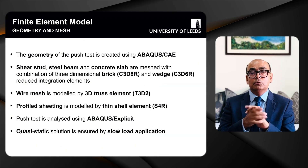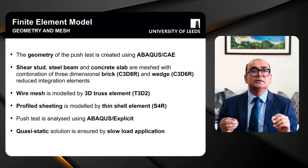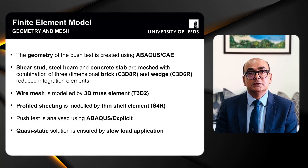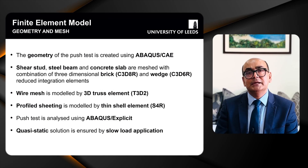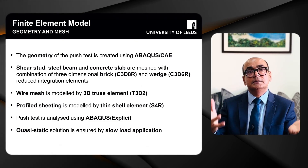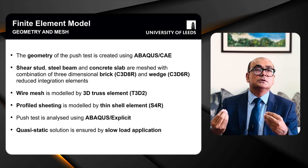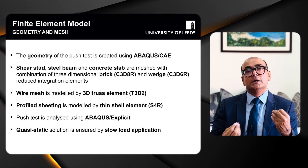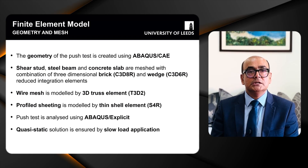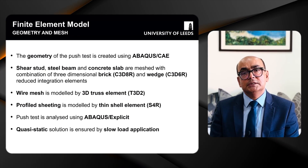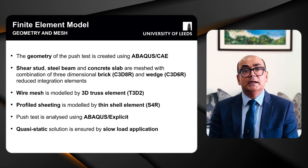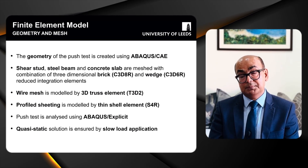The geometry was created using Abaqus CAE. The shear stud, steel beam, and concrete slab are all meshed using brick elements C3D8R and wedge elements C3D6, which are reduced integration elements. We use reduced integration to eliminate shear locking, especially in deep concrete parts where shear locking can produce incorrect results. Wire mesh is modeled using 3D truss element T3D2, profile sheeting uses thin shell elements, and the push test is analyzed using Abaqus Explicit with quasi-static solution ensured by slow load application.